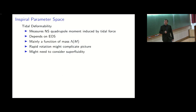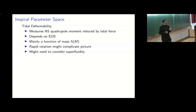The most important parameter is of course the tidal deformability, which measures how the quadrupole moment of a neutron star changes in a tidal field. It depends strongly on the equation of state, making it a good candidate to constrain the EOS of a neutron star. For a given EOS it's mainly a function of mass, though complications arise with rapid rotation or if nuclear equilibrium is not reached in the final merger phase — but I will not talk about those here.